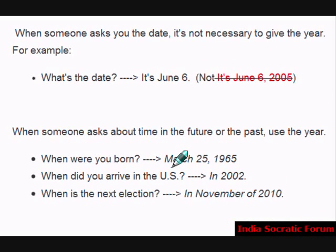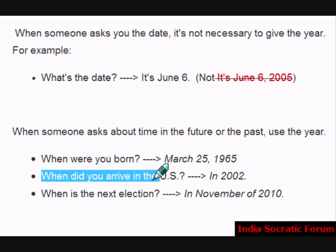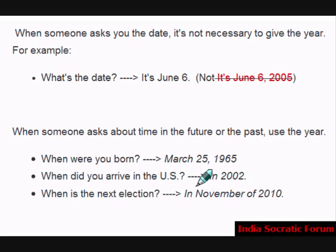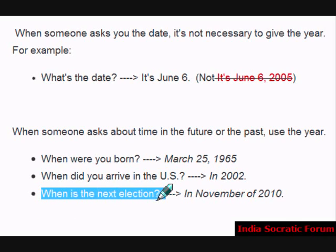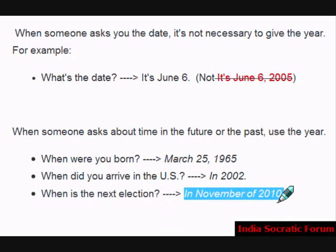When someone asks about time in the future or the past, use the year. For example, when were you born? That is a past thing, so you say March 25, 1965. When did you arrive in the U.S.? In 2002. When is the next election? It's a future date, so in November 2010. Then you have to give the year.